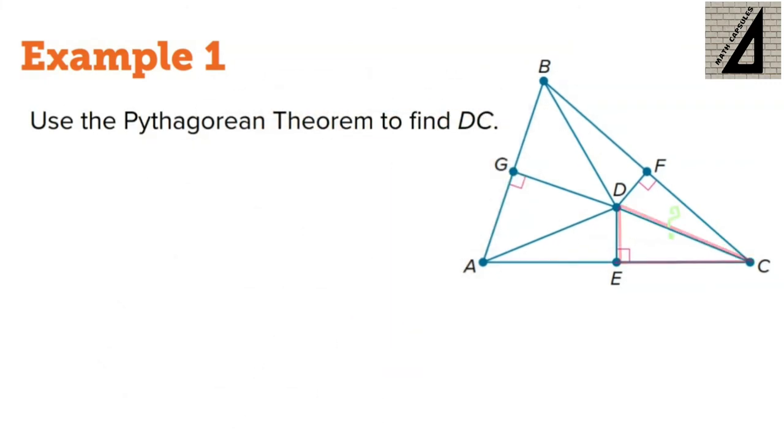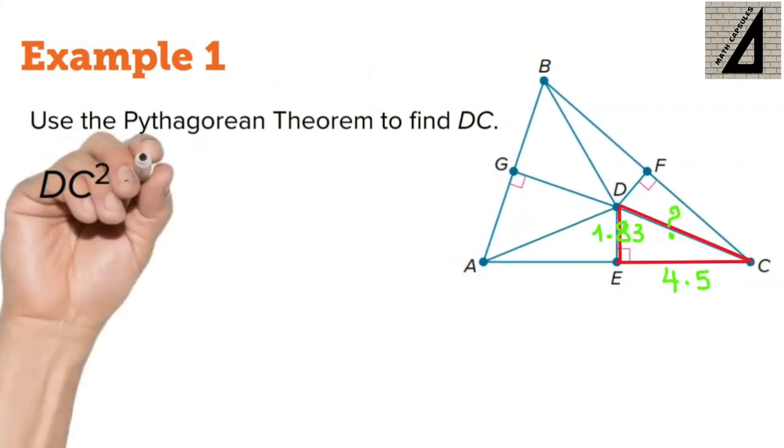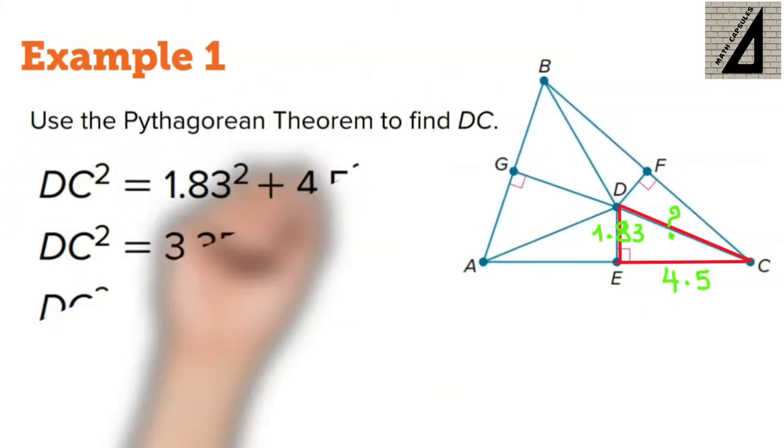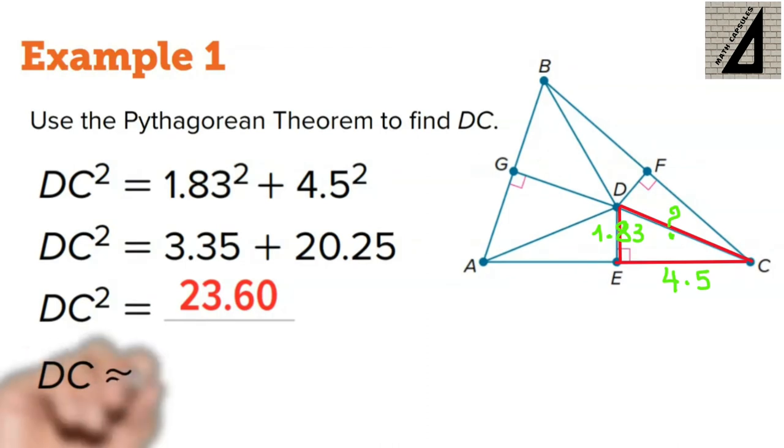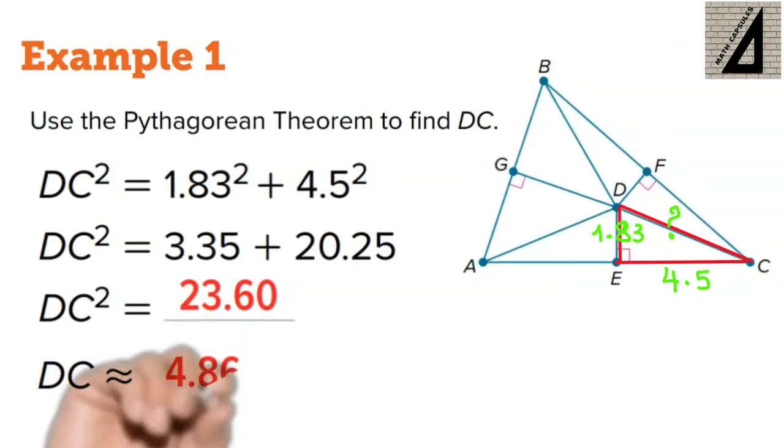Now, in triangle DEC, we are going to use the Pythagorean theorem to find DC, where DC is the hypotenuse, so DC squared equals 1.83 squared plus 4.5 squared, so DC equals 4.86.